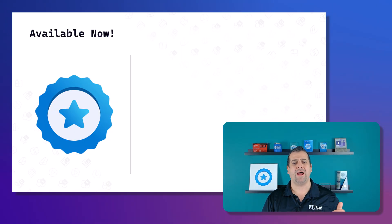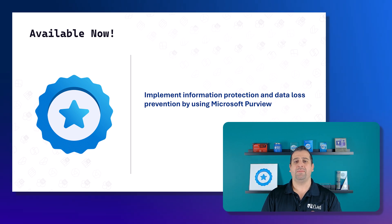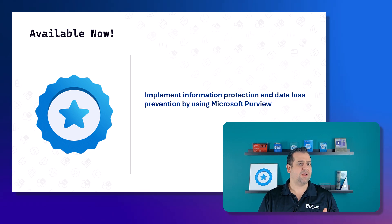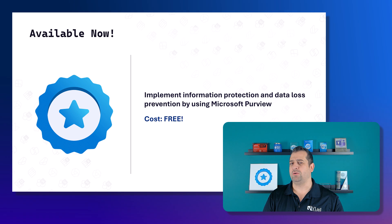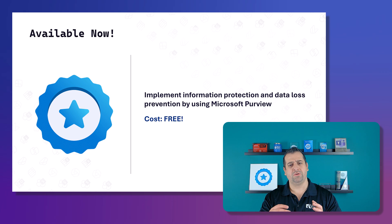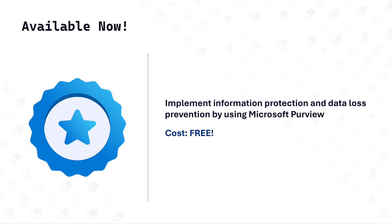Hello everybody, today we have some amazing news from the Microsoft credentials world. We have a brand new applied skill that just got released with the name of Implementing Information Protection and Data Loss Prevention by using Microsoft Purview. The cost is absolutely free, you can take it from anywhere in the world. It's a hands-on credential so you get a lab, you get to do a few tasks to prove that you know the topic, and there's no proctor, no scheduling and no cost.